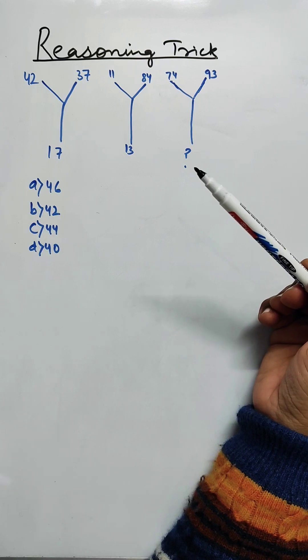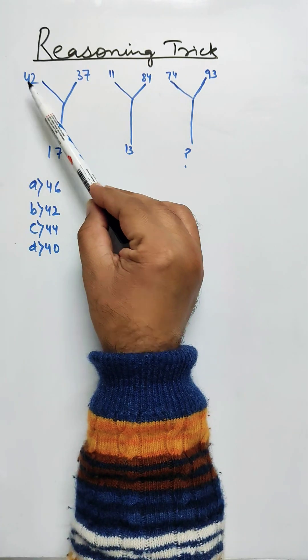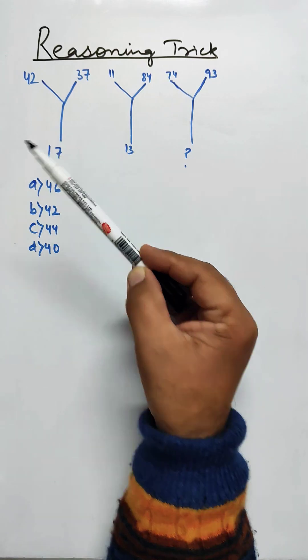Now in these type of questions, we have to apply the operations on 42 and 37 to get 17.